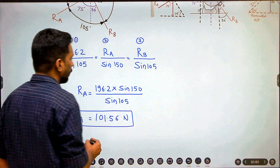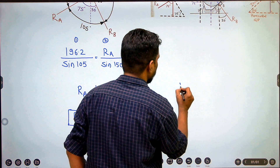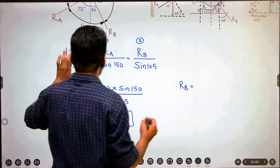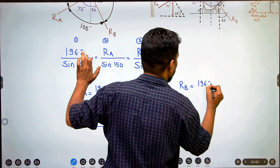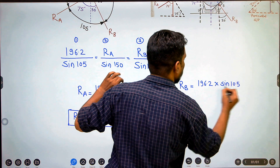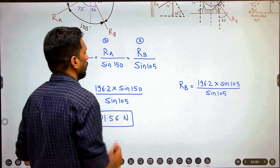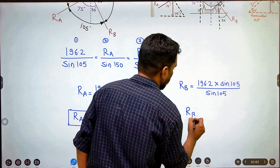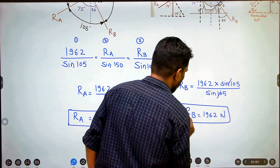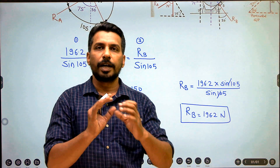Now equating the first and third ratios: RB = 196.2 × sin(105°) / sin(105°). Since the denominators are the same, RB = 196.2 N. These are the values of the contact forces — reactions at A and B.